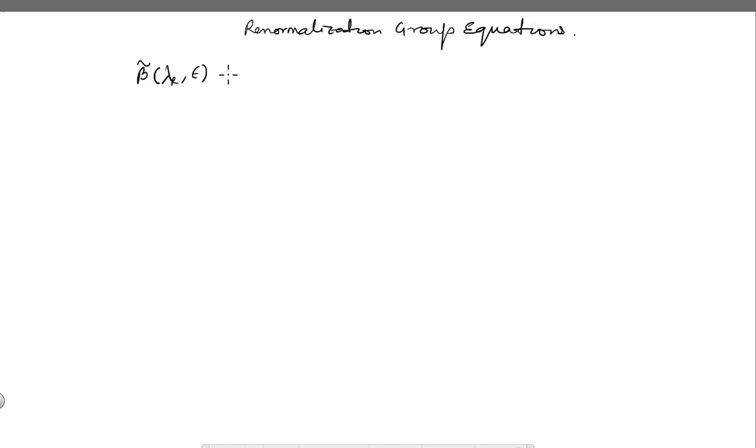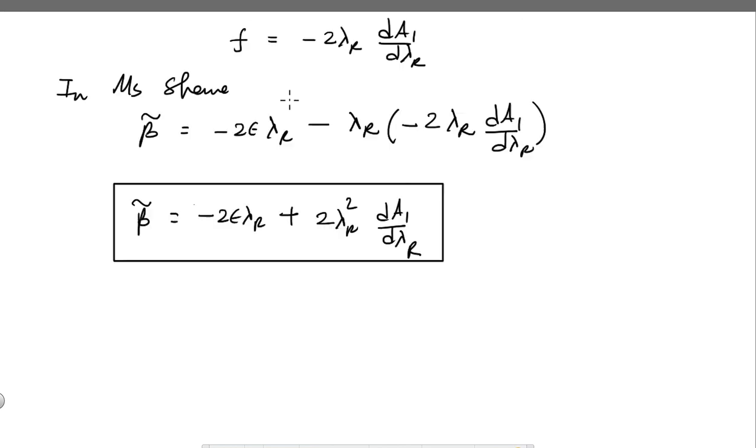We took d equal to 4 minus 2 epsilon. In MS bar scheme it depends only on lambda r and epsilon. In general scheme it will depend also on mr and mu explicitly, but in this case the mu dependence is implicit. This was defined to be d lambda r over d mu.